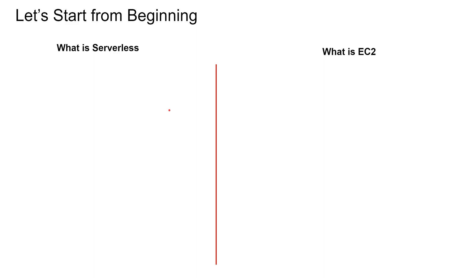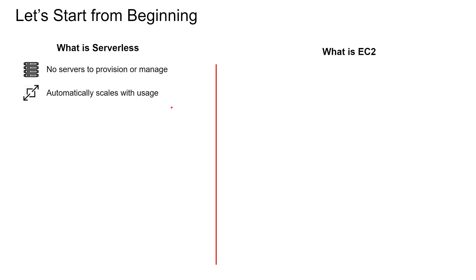So what is serverless? Serverless has these four properties: no servers to provision or manage, either physical or virtual; it automatically scales with usage — you do not have to define an auto-scaling group, auto-scaling policy, etc. If traffic goes up it will scale up, and when traffic goes down it will scale down. You pay for what you use and never pay for idle. And lastly, it is inherently highly available — in the back end, it is automatically deployed in more than one availability zone.